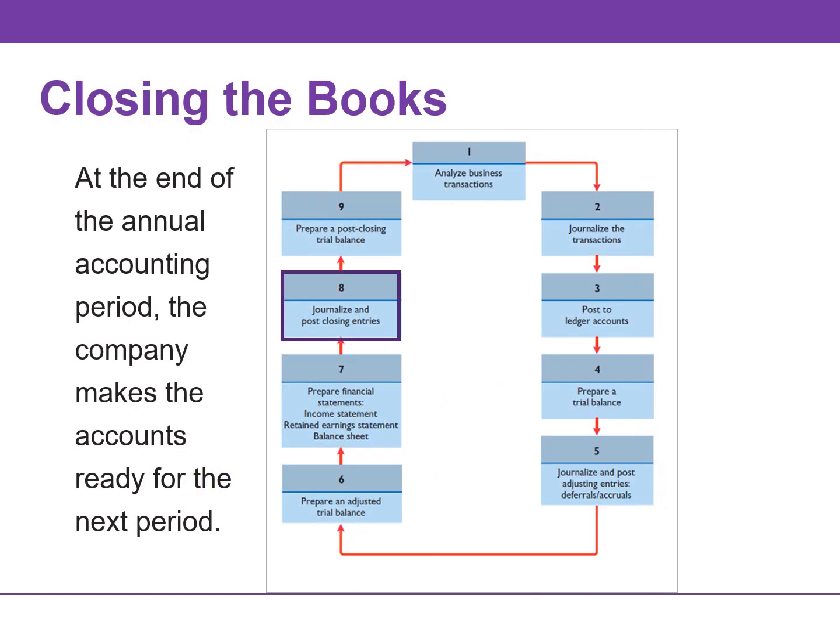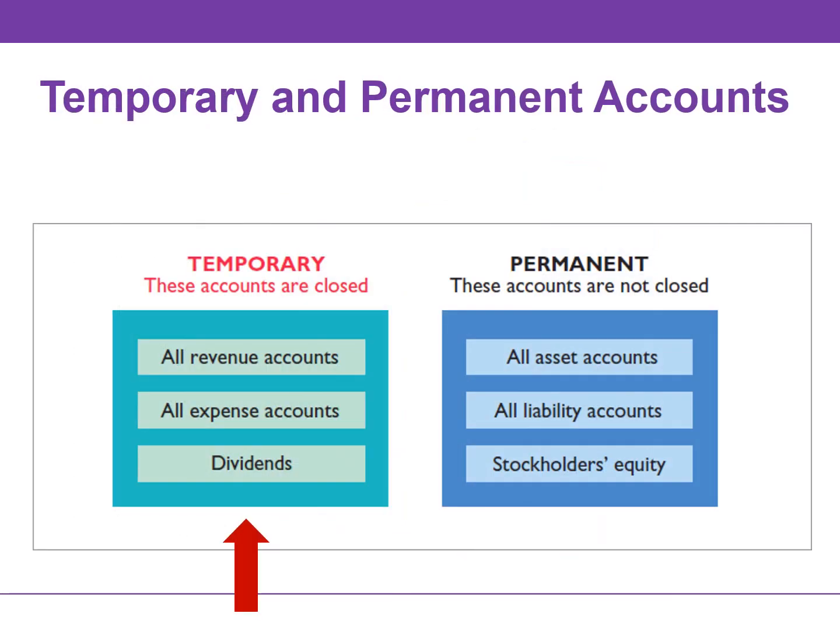At the end of the accounting period, the company makes the accounts ready for the next period. This is called closing the books. Temporary accounts relate only to a given accounting period. They include all income statement accounts and the dividends account. The company closes all temporary accounts at the end of the annual accounting period.